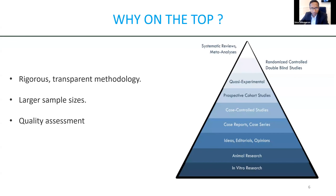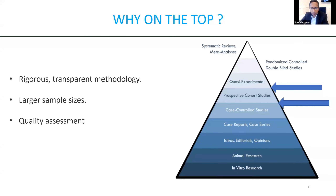That's why systematic reviews sit at the top of the evidence pyramid. They have rigorous and transparent methodology. They can collate into larger sample sizes and give an assessment of quality within that particular work. If you're going to do a systematic review of case control studies, it would sit at that level of evidence, and so on for each type of study — the highest being a systematic review or meta-analysis of RCTs.